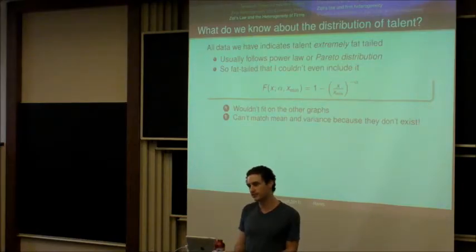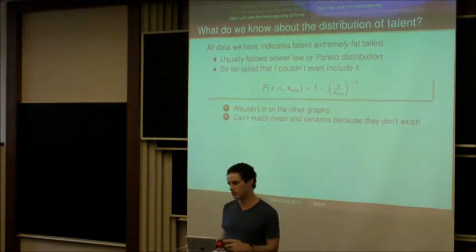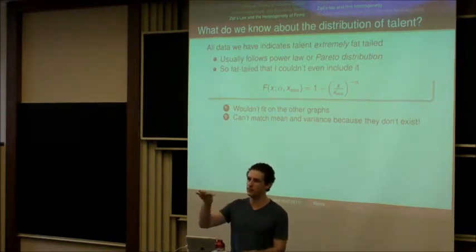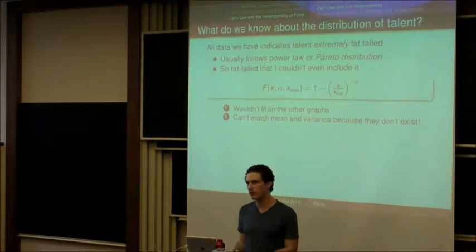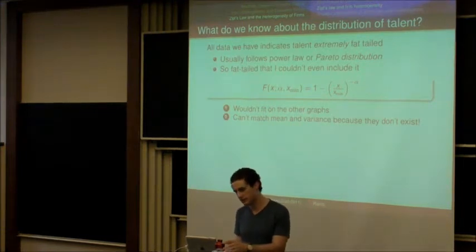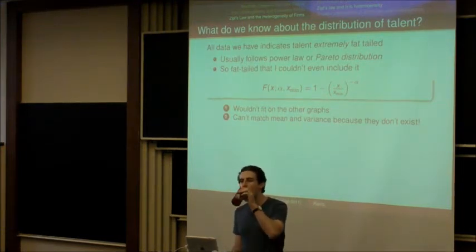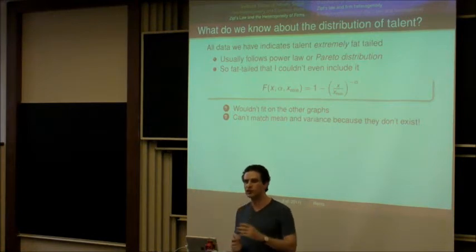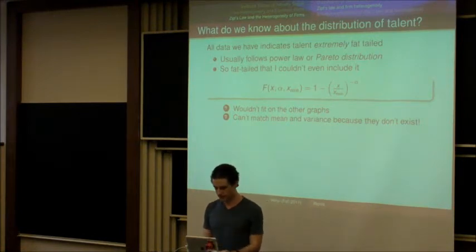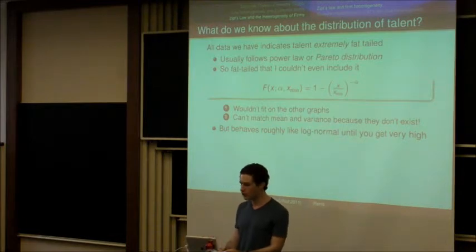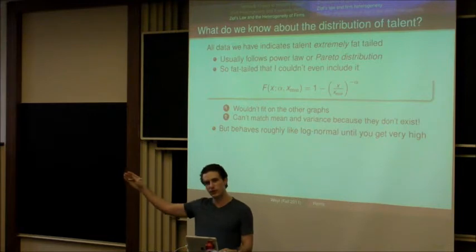Alpha is just a parameter, so it'll vary from distribution to distribution, and x-min is the minimum level of talent for each individual person. This distribution behaves roughly like a log-normal distribution until you get very high into the talent range, and then it gets much more fat-tailed than even a log-normal distribution.